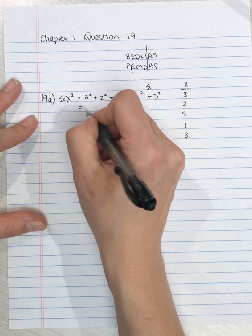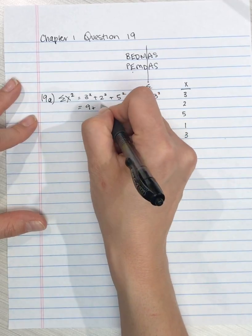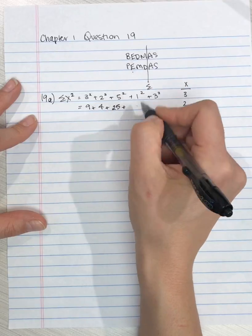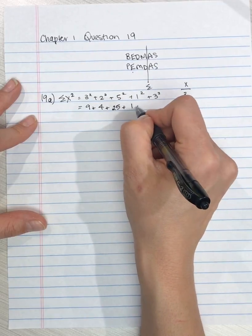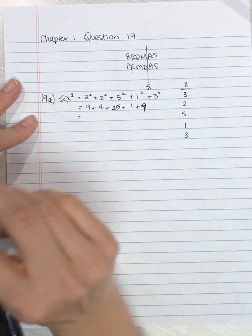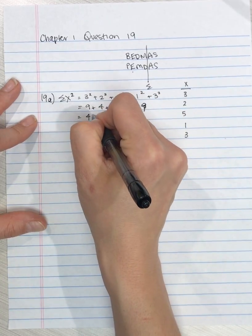So 3 squared is 9 plus 2 squared is 4, plus 5 squared is 25, plus 1 squared is 1, plus 3 squared is 9. And so if you add those up, the answer is 48.